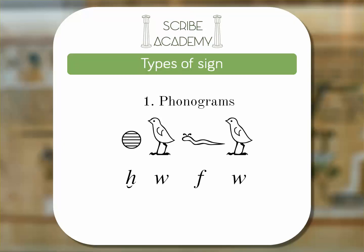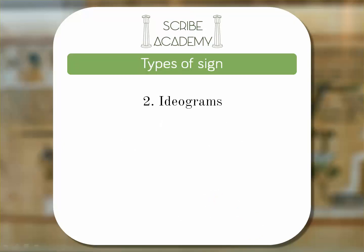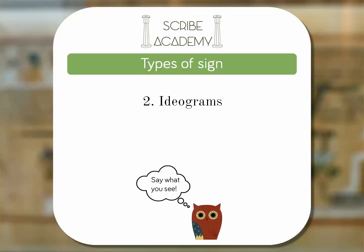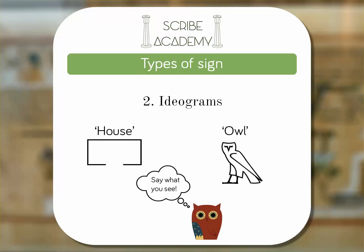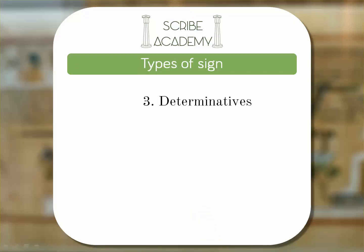The second type of sign is the ideogram. Ideograms are picture signs — say what you see. The word for house is the hieroglyph of a house; the word for owl is the hieroglyph of an owl.